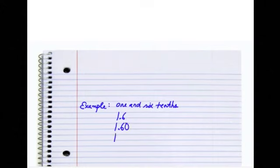Let's start out with an example. The first example I want to talk about is a number called one and six tenths. And this number can be written many different ways. It can be written exactly as it's said, which is one and six tenths, 1.6, 1.60, or 1.600.